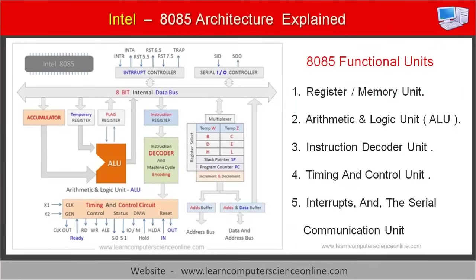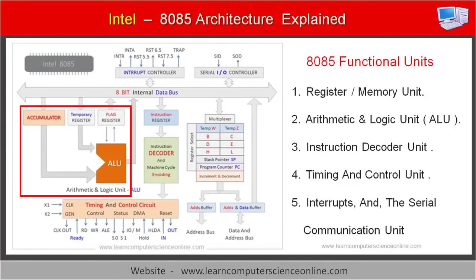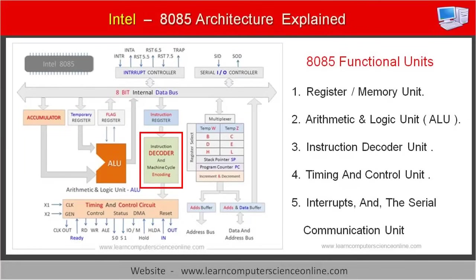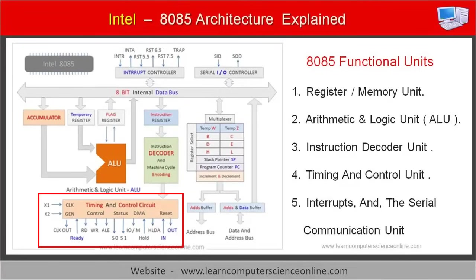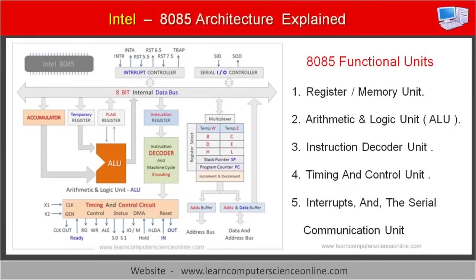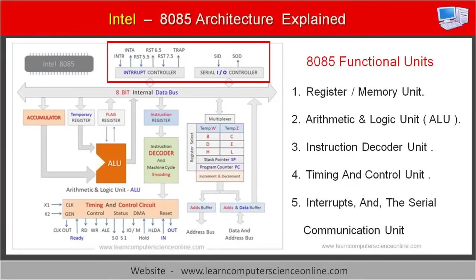The five microprocessor functional units are: first, the memory unit, also referred to as the register unit; second, the arithmetic and logic unit, ALU; third, the instruction decoder and machine cycle encoder unit; fourth, the timing and control unit; and fifth, the interrupts and serial communication unit.